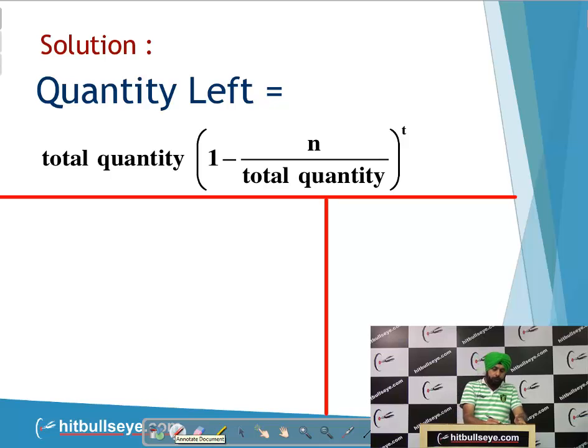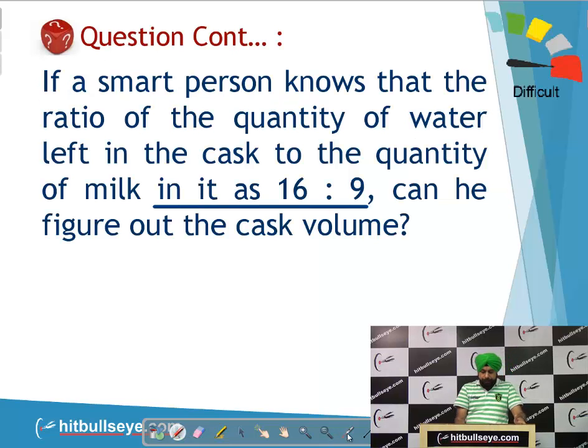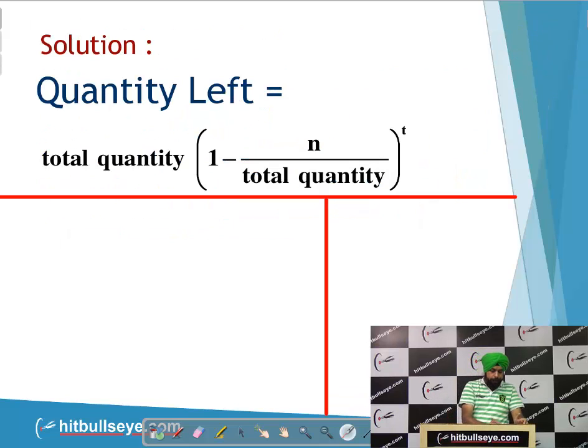Now if I refer to the question once again, it specifies that the ratio is 16 to 9 for water to milk. This means water is 16 if the milk happens to be 9. You can say the quantity left will be 16 by 25 of the total, as 16 water and 9 milk is there, which was also a part of the total.